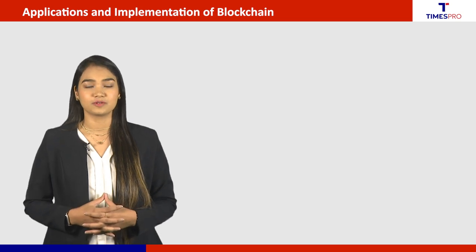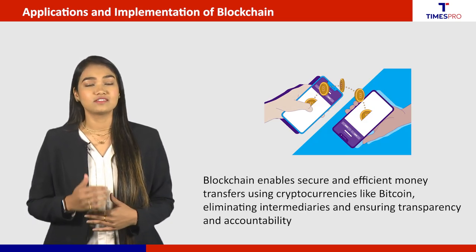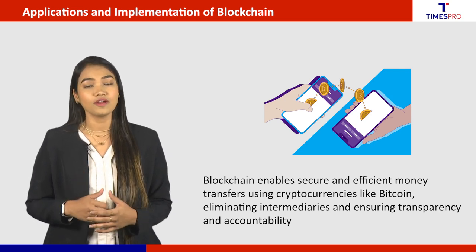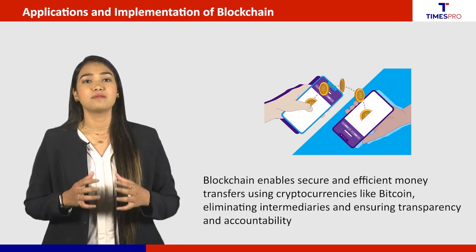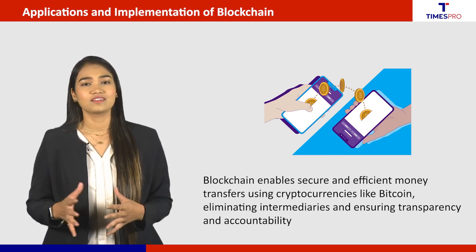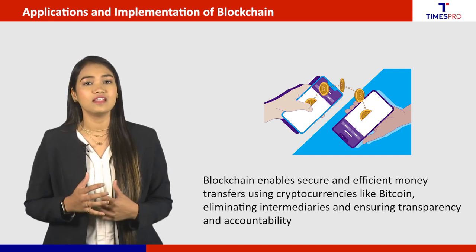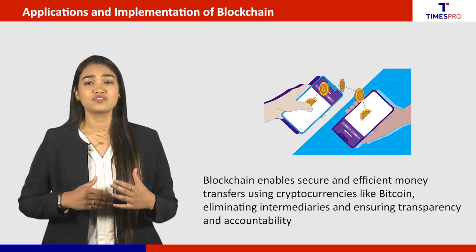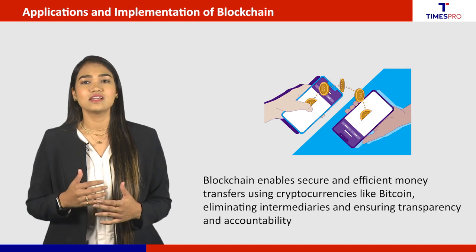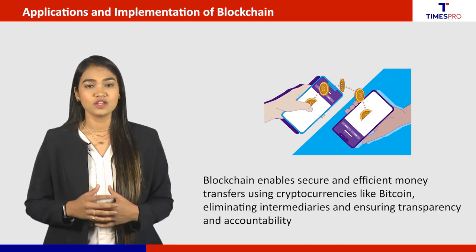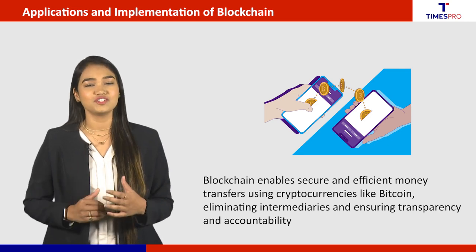First is money transfer. The first application which came into existence of blockchain technology is Bitcoin cryptocurrency. With Bitcoin's help, people can buy goods, trade, eat, travel, etc. Blockchain is a decentralized distributed digital ledger system that is transparent and immutable. When we use it to transfer digital currencies from one peer to another, the motive of transferring money is achieved.